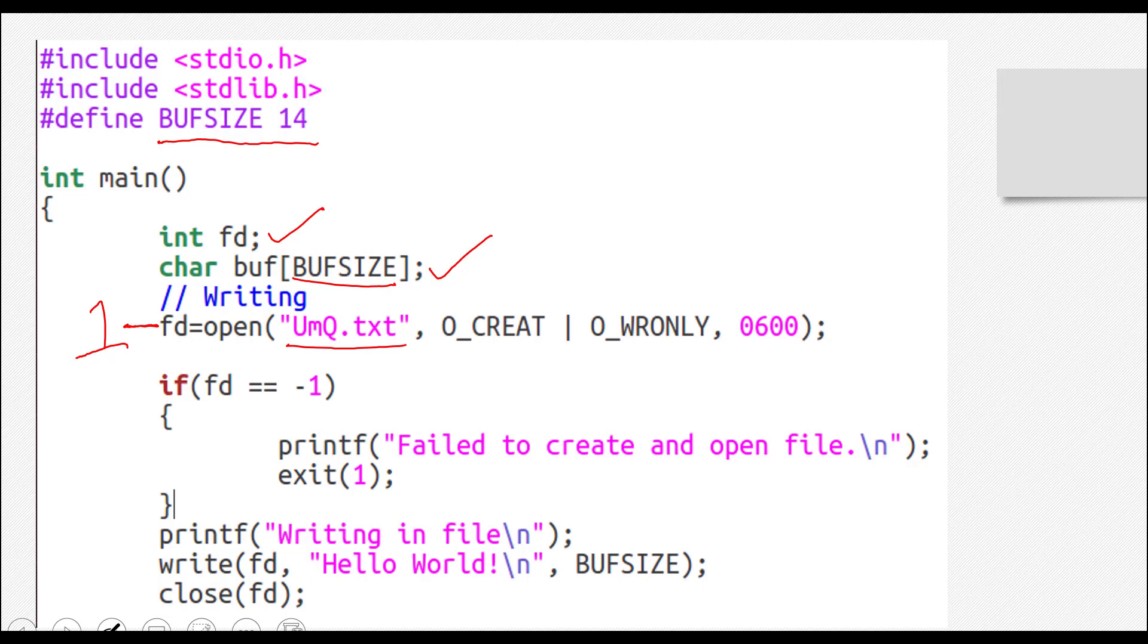The second parameters were different flags. You can see O underscore create. What is this? O underscore create is actually a flag which tells the open function that if this file does not already exist, then create it too.